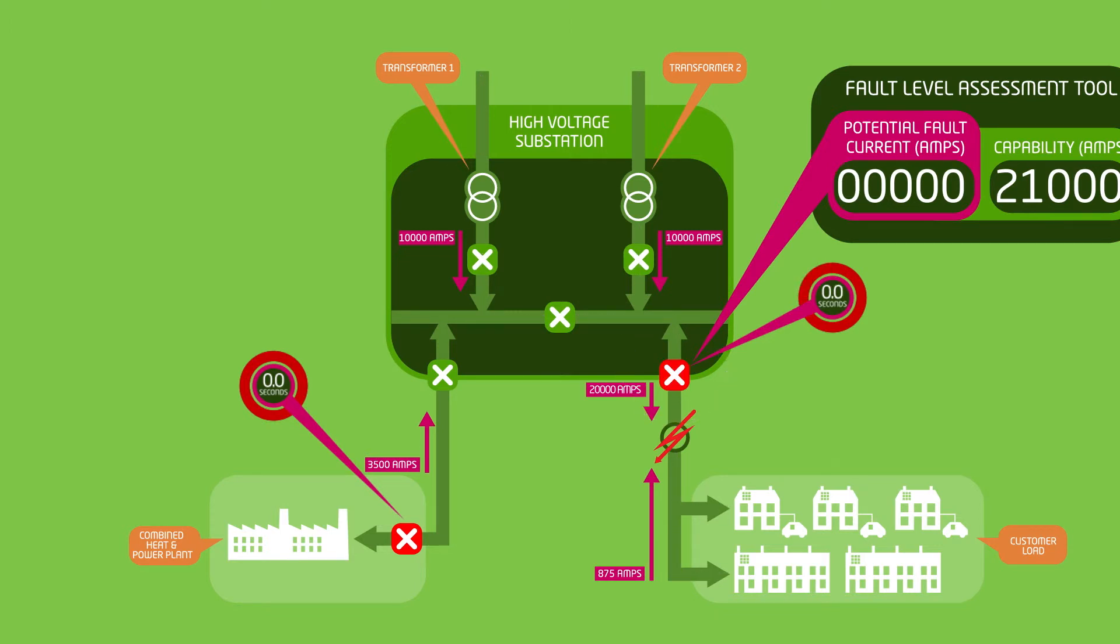The HV circuit breaker will then trip at one and a half seconds, remove the fault from the network, and allow the CHP to be reconnected.